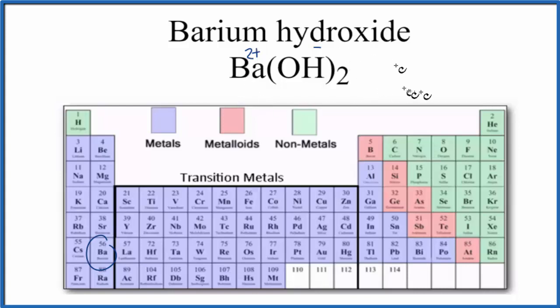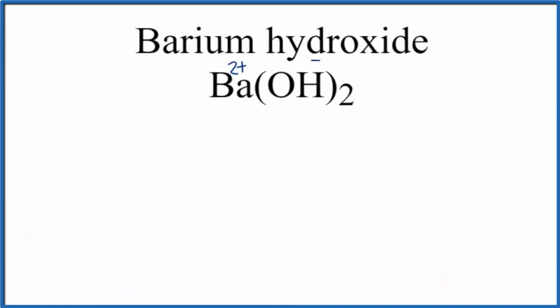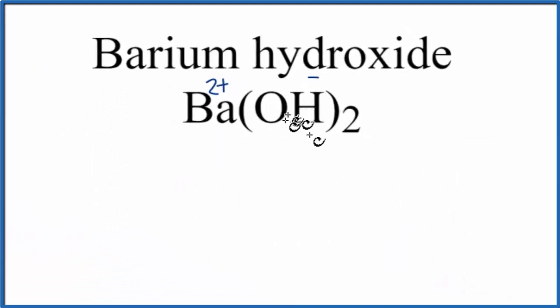So barium hydroxide, it's an ionic compound. Let's talk just briefly, though, about this hydroxide ion. So for the hydroxide ion, we'll just look at one of them. There are two. But for the hydroxide ion,